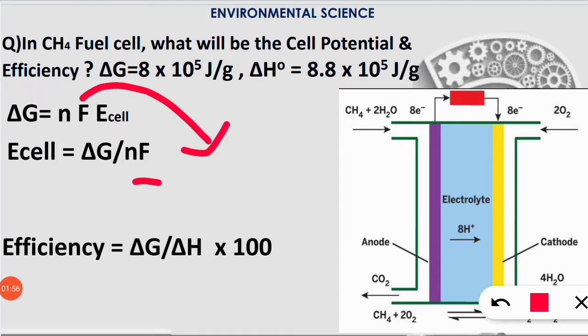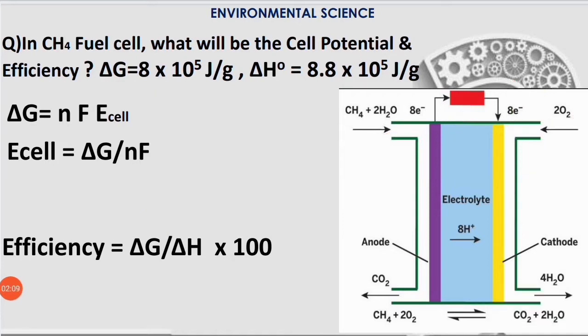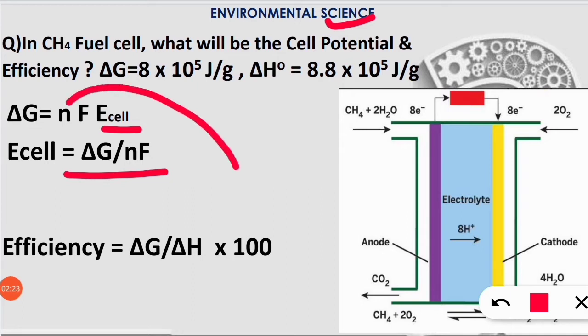F is Faraday's constant whose value is 96,500 coulombs per mole. E_cell is the cell potential which we will get from this formula. We will simply divide ΔG by nF. n is very important - it means the number of electrons transferred in the reaction.